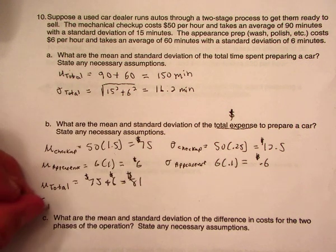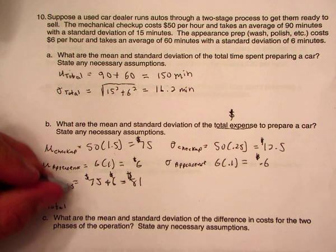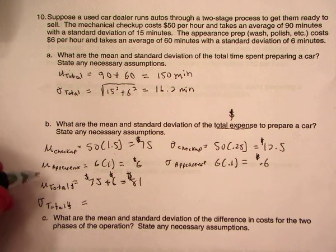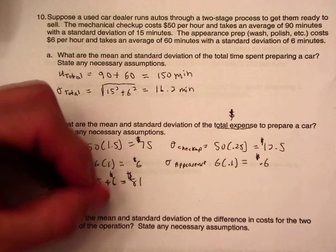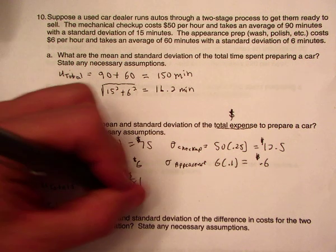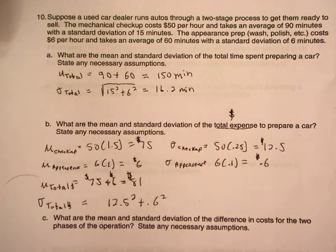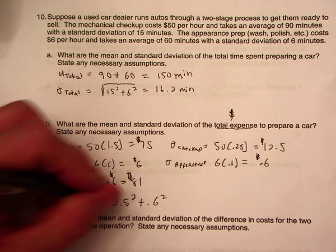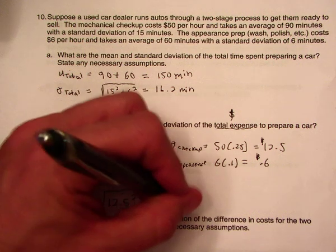The standard deviation of the total dollars — again we take the square root of the variances added together. So that's the square root of 12.50 squared plus 0.60 squared, and that comes out to about $12.51.